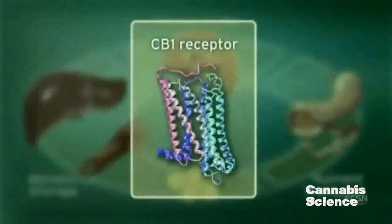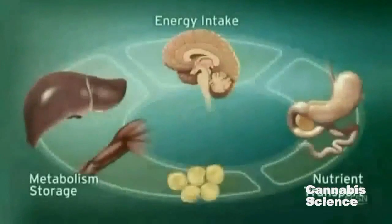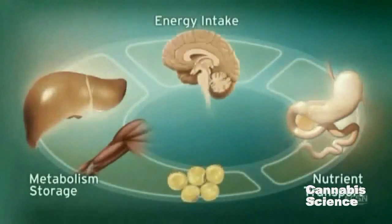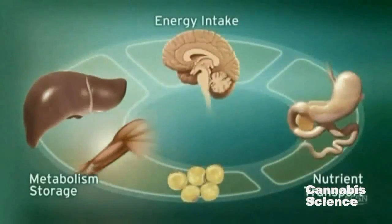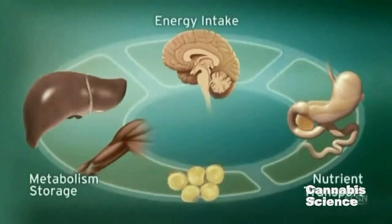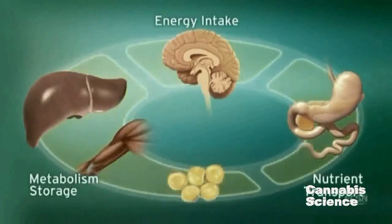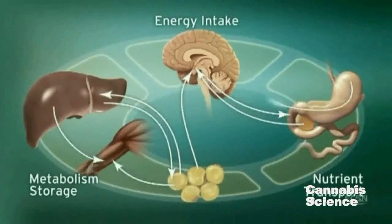CB1 receptors are located in the brain, digestive tract, muscle and adipose tissue. Integration of these central and peripheral ECS components is achieved through neuronal and hormonal signaling.